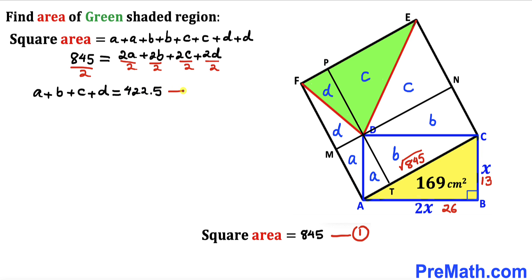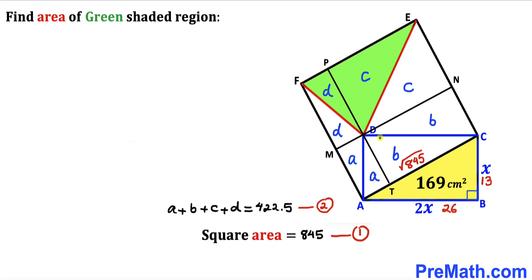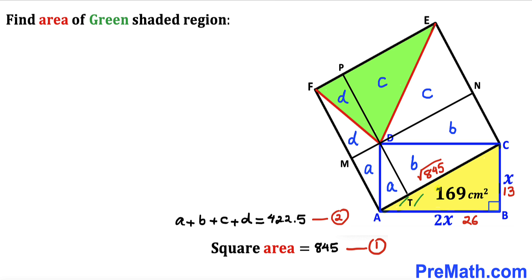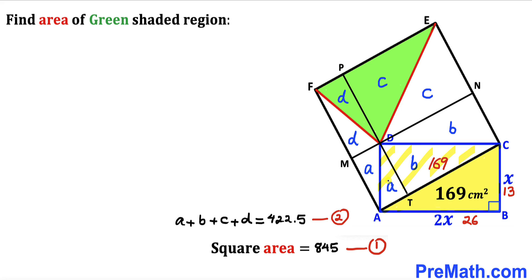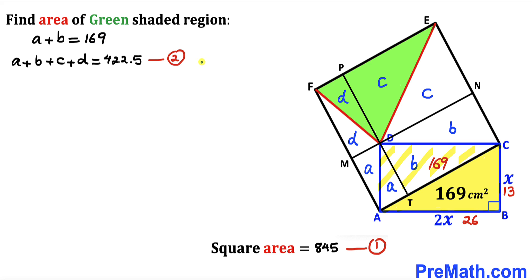Focusing on rectangle ABCD with diagonal AC, the yellow triangle has area 169, so the other identical triangle ACD also has area 169. In other words, a + b equals 169.